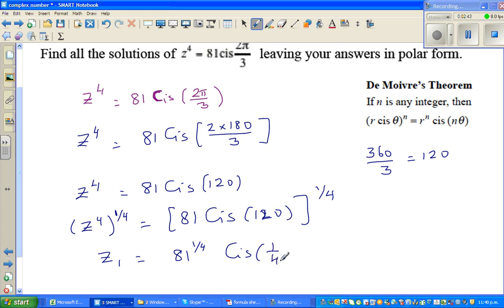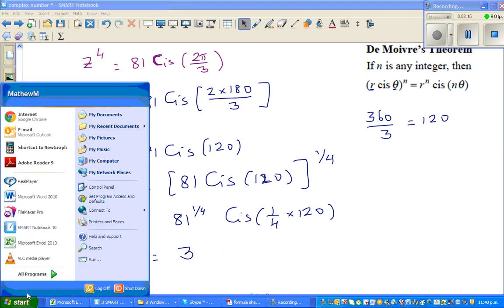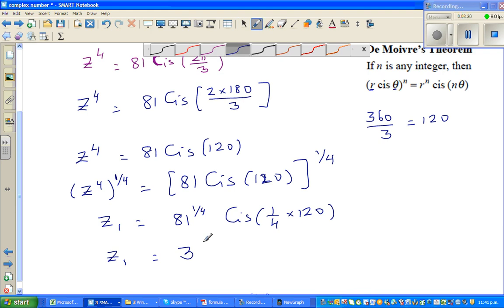Cis 1/4 times 120. I am using this rule. What you do is you raise the modulus by n and multiply the argument with n. This is the modulus and this is the argument. So z1, the 4th root of 81 is 3. You should be knowing that. I can do this on the calculator: menu, run, 81 raised to 0.25, which is 3. So this is 3 cis 30 degrees.